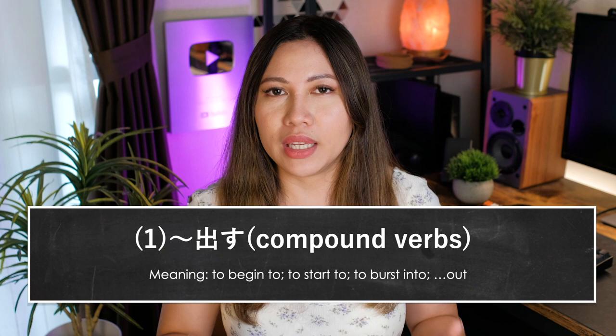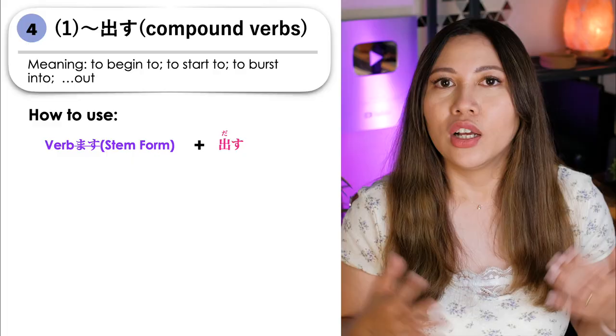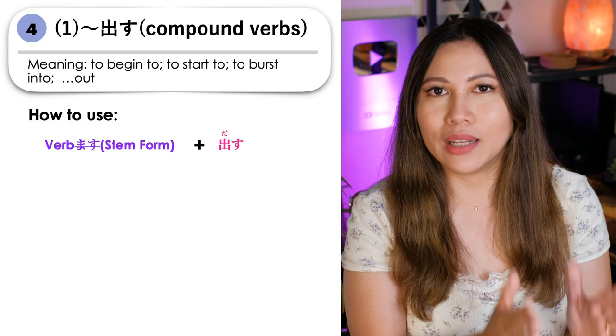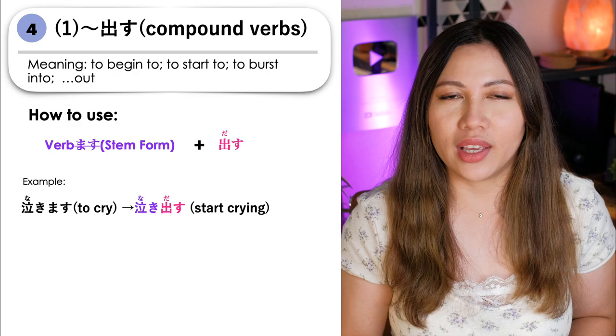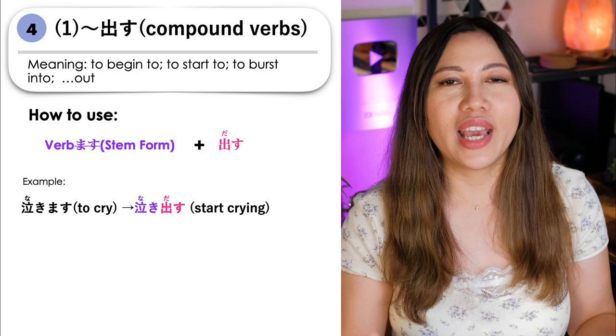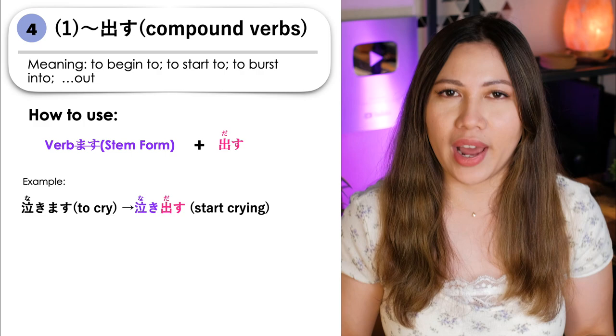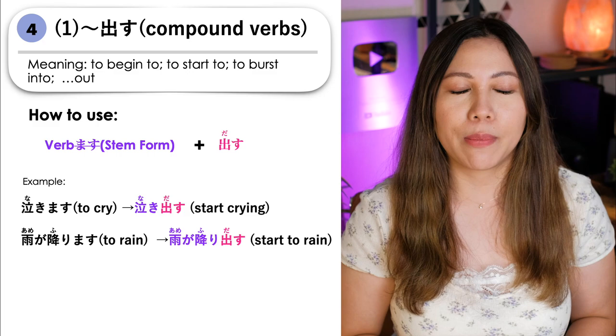Another meaning when we pair dasu with another verb is it indicates the beginning or when an action starts or commences — meaning to begin to, or to start to, or to burst into. Verbs should be in masu form. For example, the verb naku, or to cry. We change it to masu form: nakimasu. Then we remove masu, so we are left with naki, and then we add dasu: nakidasu, meaning to start crying or to burst into tears. Another example: ame ga furimasu. We remove masu — ame ga furi — and then we add dasu: ame ga furidasu, meaning to start raining.